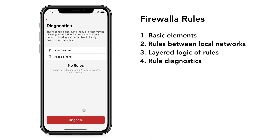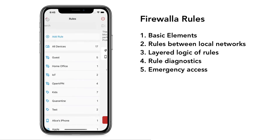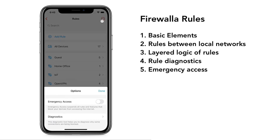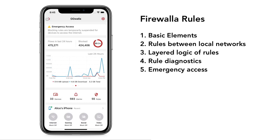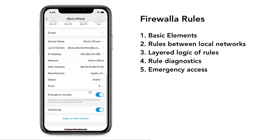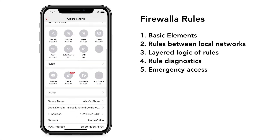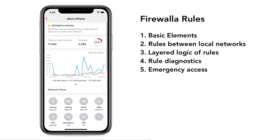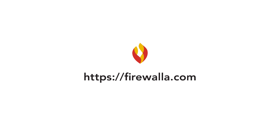If you want a quick way to fix the problem, you can turn on Emergency Access Mode under Rules Diagnostics. This will turn off all rules in the system for all devices. You can also turn on Emergency Access Mode under the device screen, which will only impact that device. If you want to know more about rules management, click on the link in the comment section.